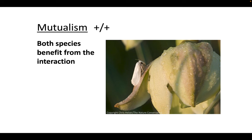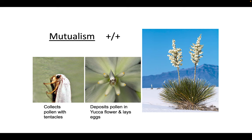In mutualism, both species benefit from the interaction. We can look at this with the yucca moth and the yucca flower it lives on. The yucca moth will feed on the yucca flower and lay its eggs on it, getting pollen on its body and moving it from one yucca plant to another, aiding in pollination. The positive for the moth is a place to lay eggs and a food source in the nectar, and the positive for the yucca plant is that it gets its pollination done by the yucca moth.